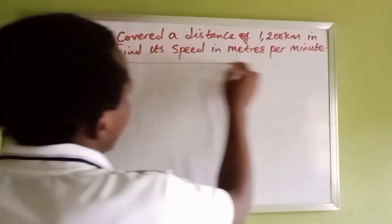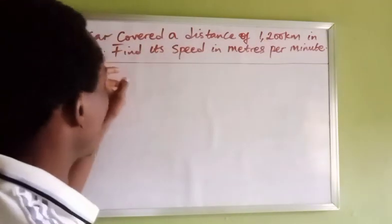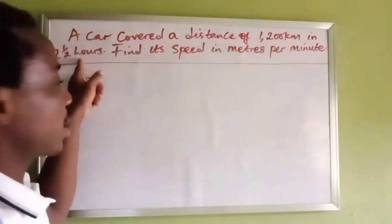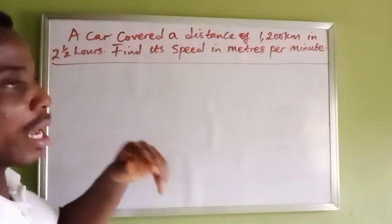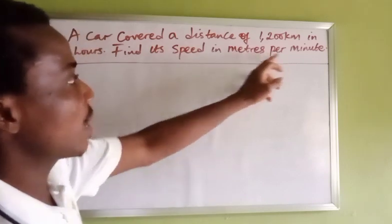Now we need to first get the average speed of the car in kilometers per hour, because the distance is in kilometers and the time is in hours. So let's get its average speed in kilometers per hour and then convert it to meters per minute.